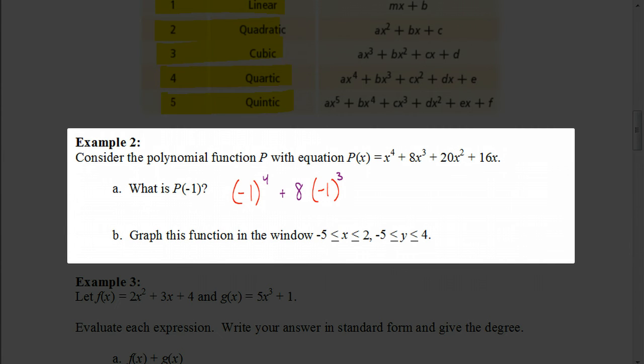Then the next term, we would have plus 20 times negative 1 squared. And the next term, we'd have plus 16 times negative 1. So you can see what I've done here is I've just replaced all these x's with negative 1's. And you could type that in on your calculator, and when you do that, you'd get your answer. And your answer would be negative 3.